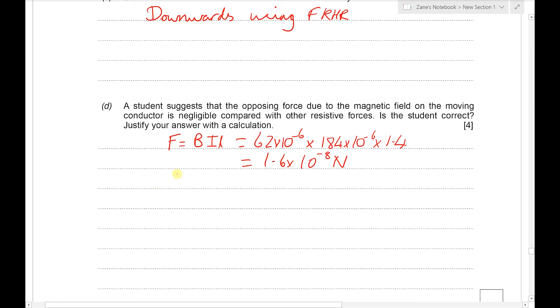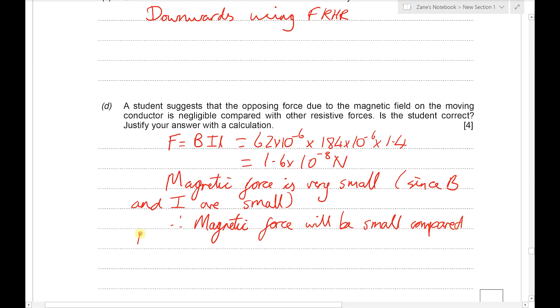And that's a very small force. So let's put a few comments down. The magnetic force is very small, and that's because B and I are both small, and that's going to mean that this resistive force is going to be small compared to frictional forces. So just to make it clear, the student is correct.